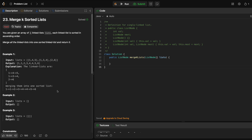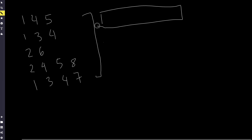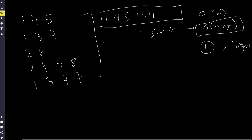Let's brainstorm different approaches. The first very simple naive approach is maybe we combine all of these lists into one singular list — so we'd have 1, 4, 5, 1, 3, 4, etc., all of the elements combined. Once we have this list, it'll take O(n) to create it, and we can then sort it, which will take O(n log n). This algorithm doesn't take advantage of the fact that each list is sorted — even if each list was not sorted, this algorithm would still work.